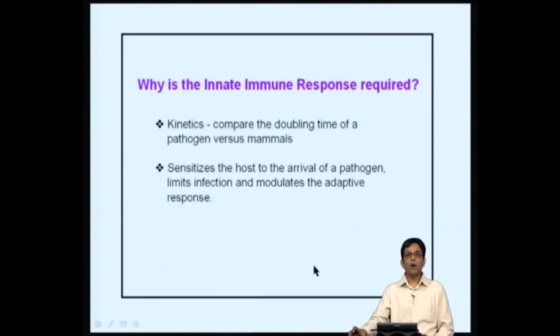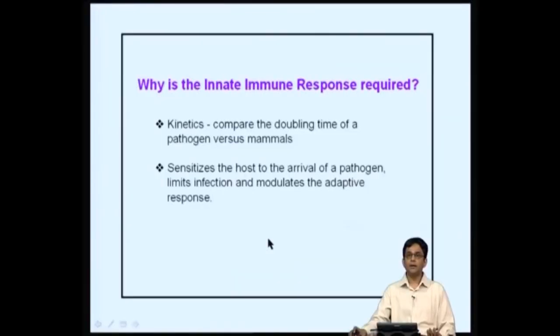Why is the innate immune response required? We can compare the doubling time of pathogens versus mammals. For pathogens such as E. coli or Salmonella, the doubling time is about 20 minutes, whereas for vertebrates and mammals the doubling time is much longer. So the pathogen is at an advantage — they can double much faster and overwhelm the host. That is why the host has different sorts of networks and immune mechanisms to deal with this fast doubling rate.